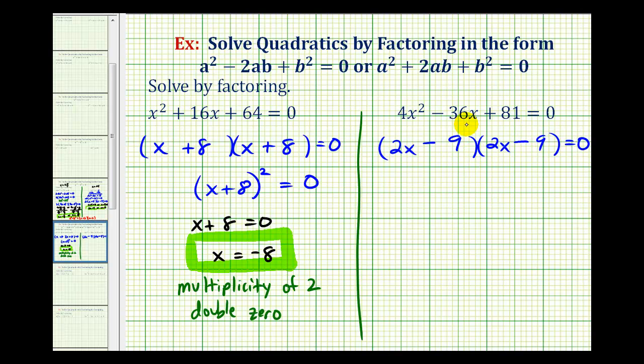And then to see if this actually works, we just need to make sure the sum of the inner product and the outer product is equal to the middle term of -36x. Notice the inner product is -18x and so is the outer product, which would sum to -36x, so this is factored correctly.